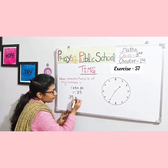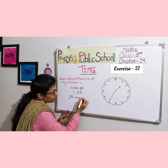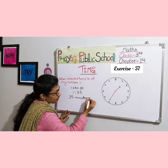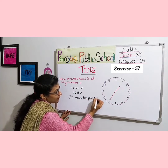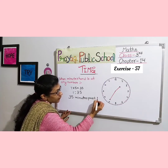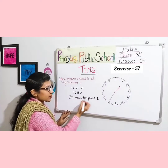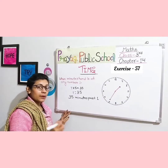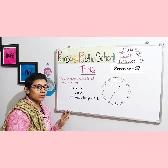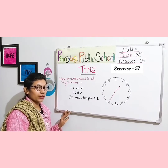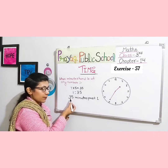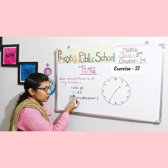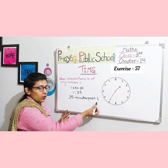We write the time as 1:35. We can also write it another way: 35 minutes past 1. This means 35 minutes have passed since 1 o'clock. Whatever the minutes are, you write them first, then 'past', then the hour number.